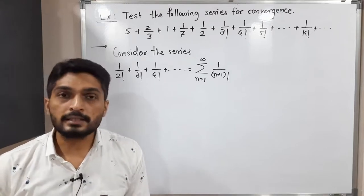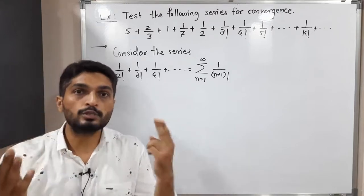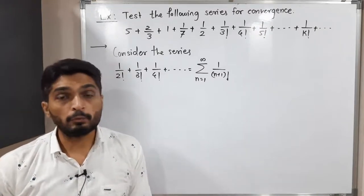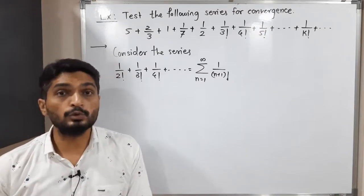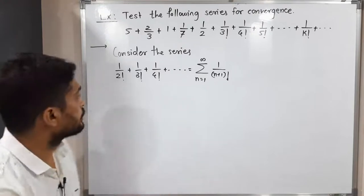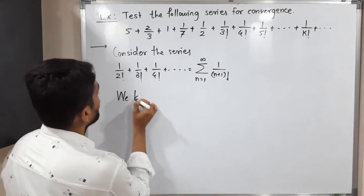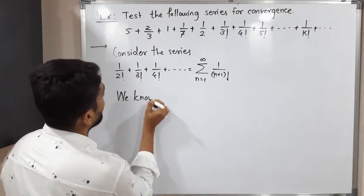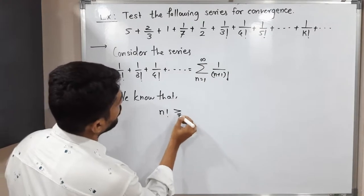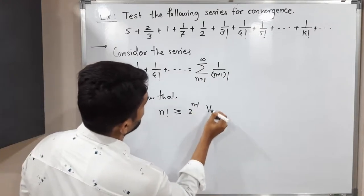In the comparison test one more series is required — we compare two series to draw a conclusion. For that I am going to use a result we have already studied in first year. We know that n factorial is always greater than or equal to 2 raised to (n−1), and this is true for all n belonging to the set of natural numbers.